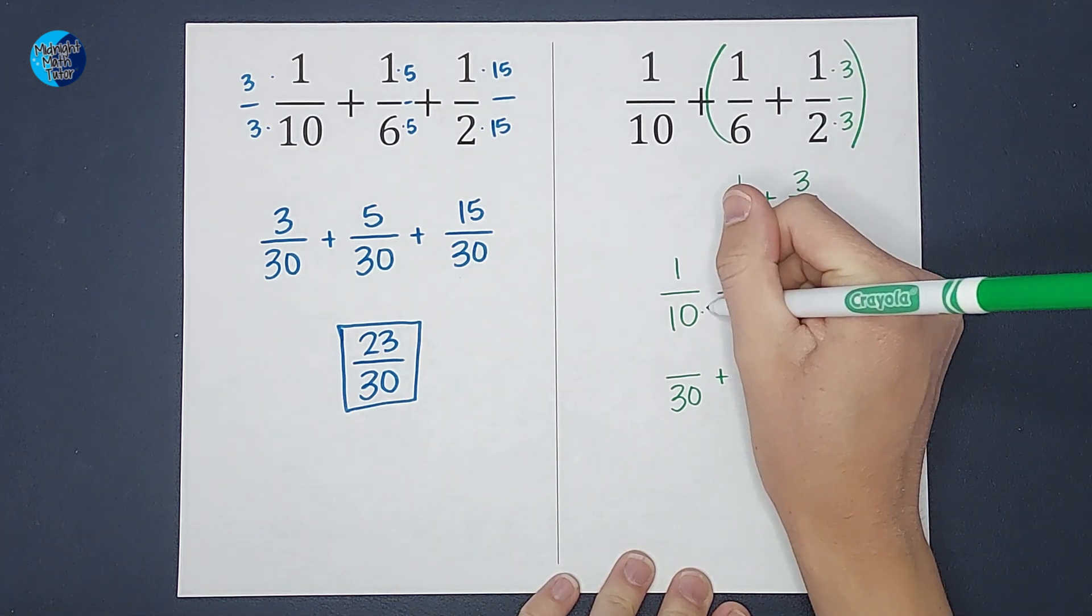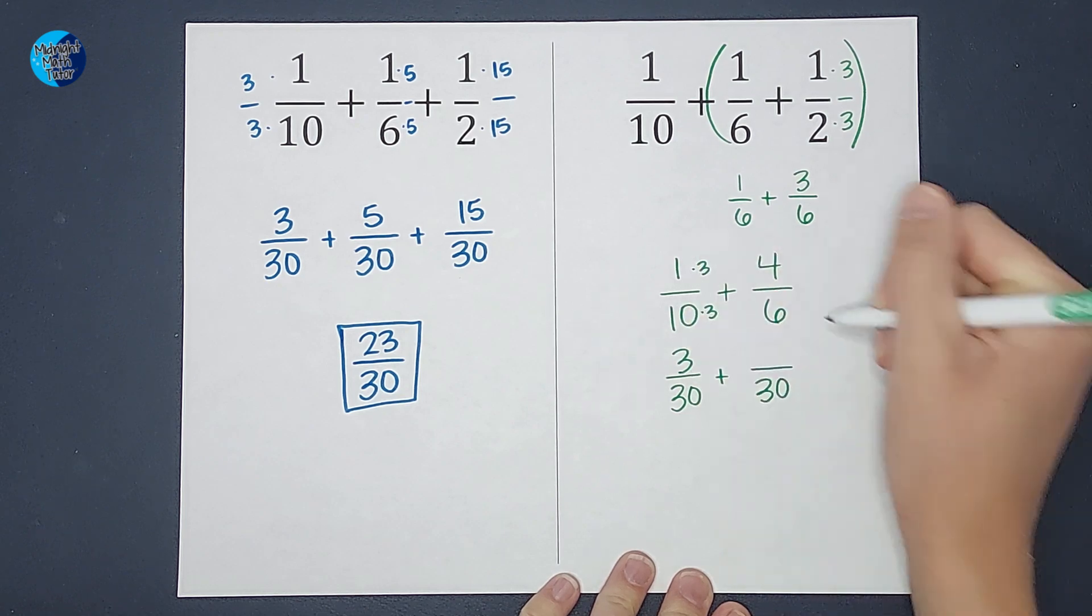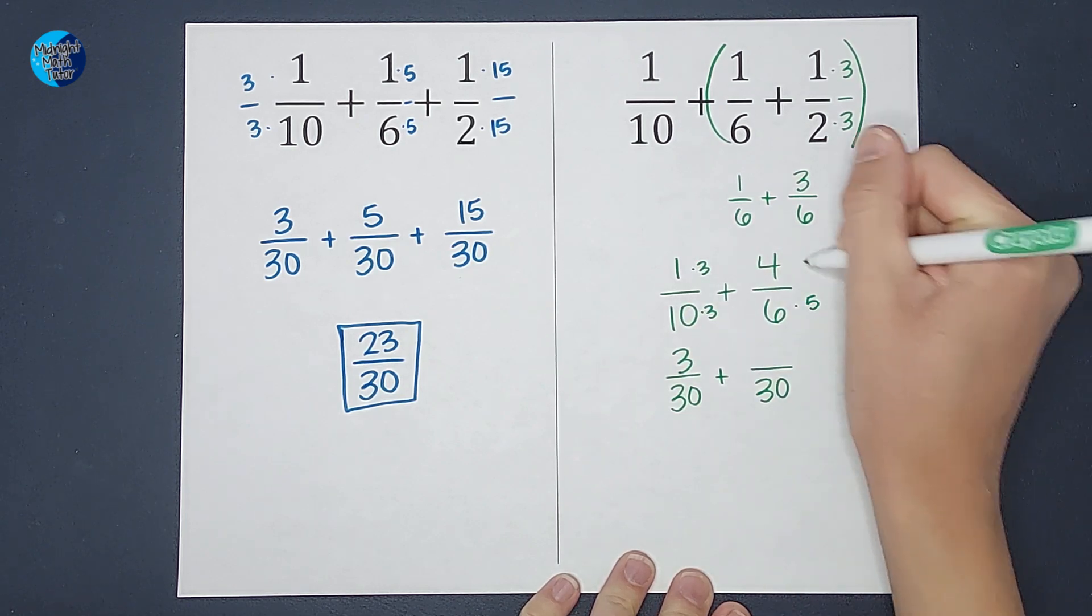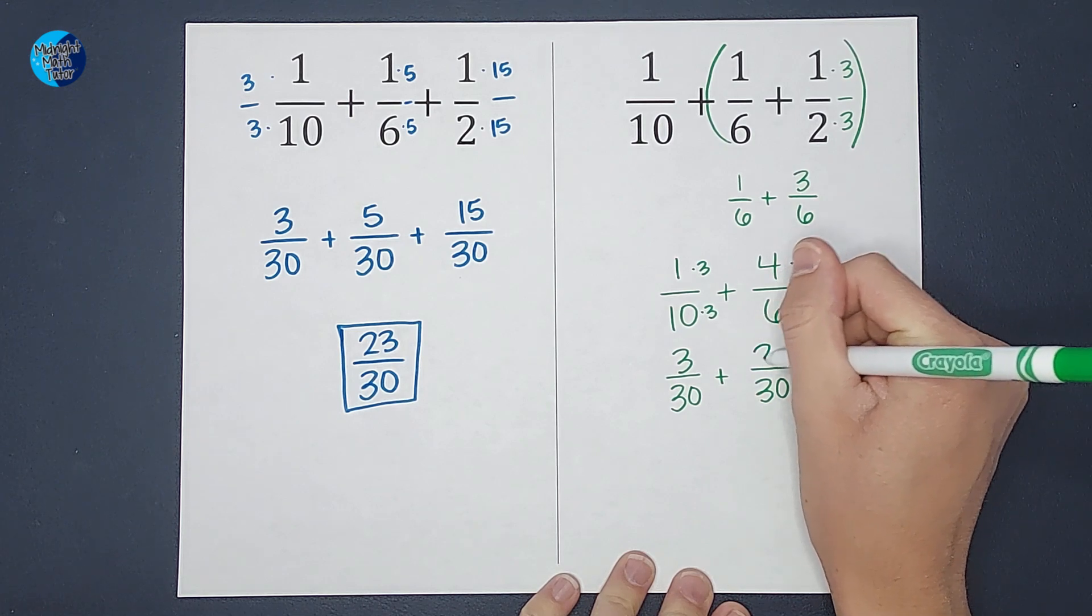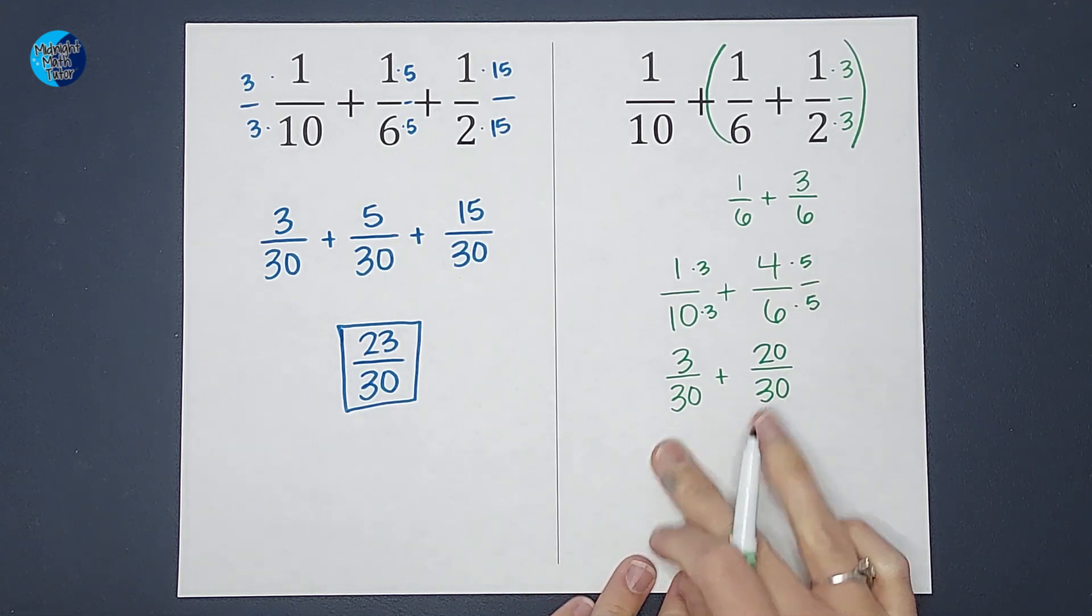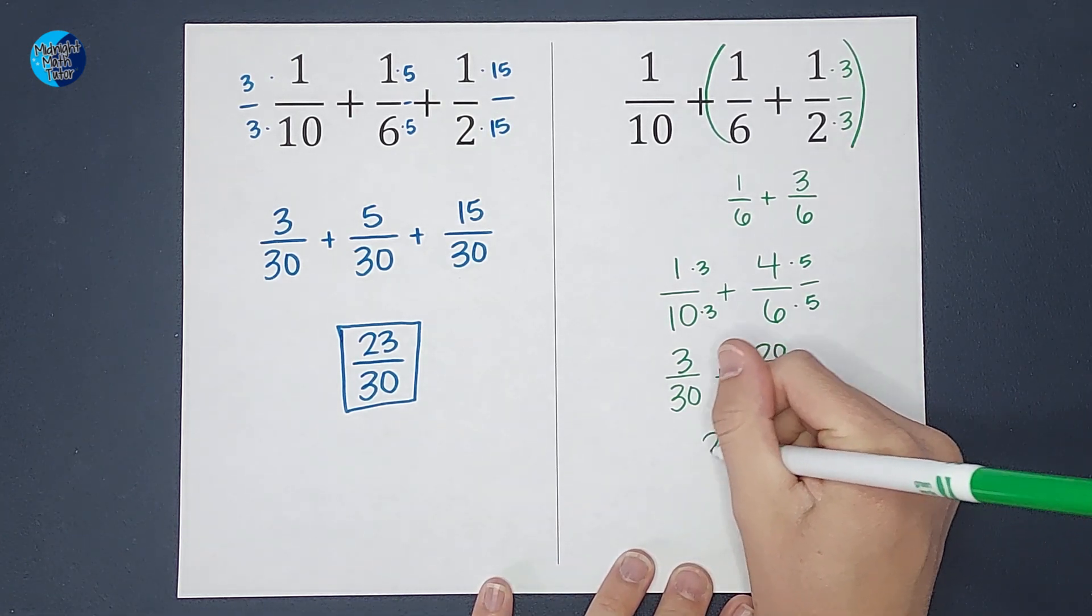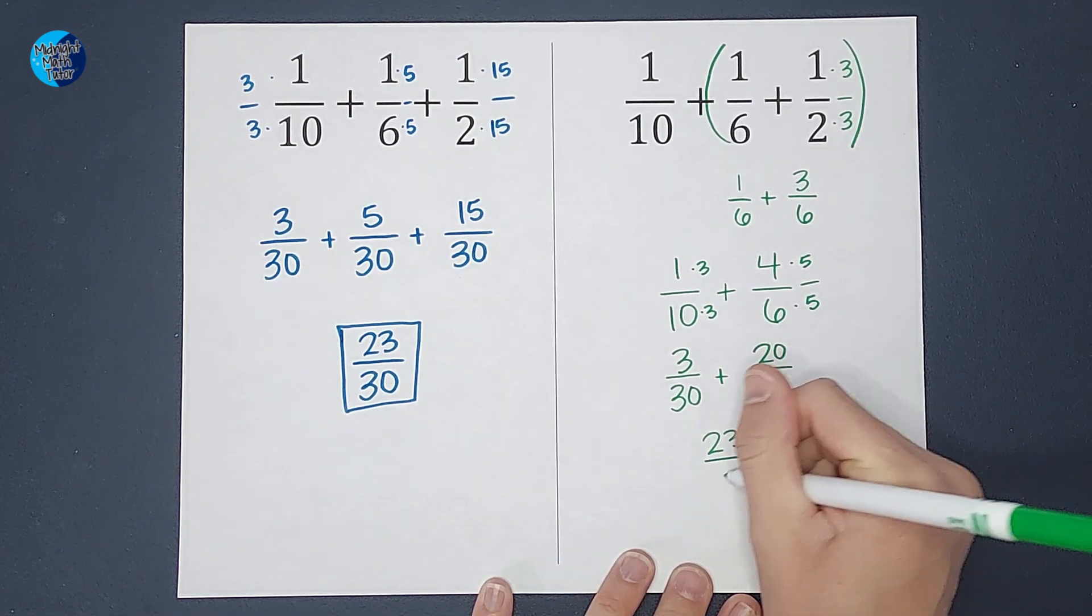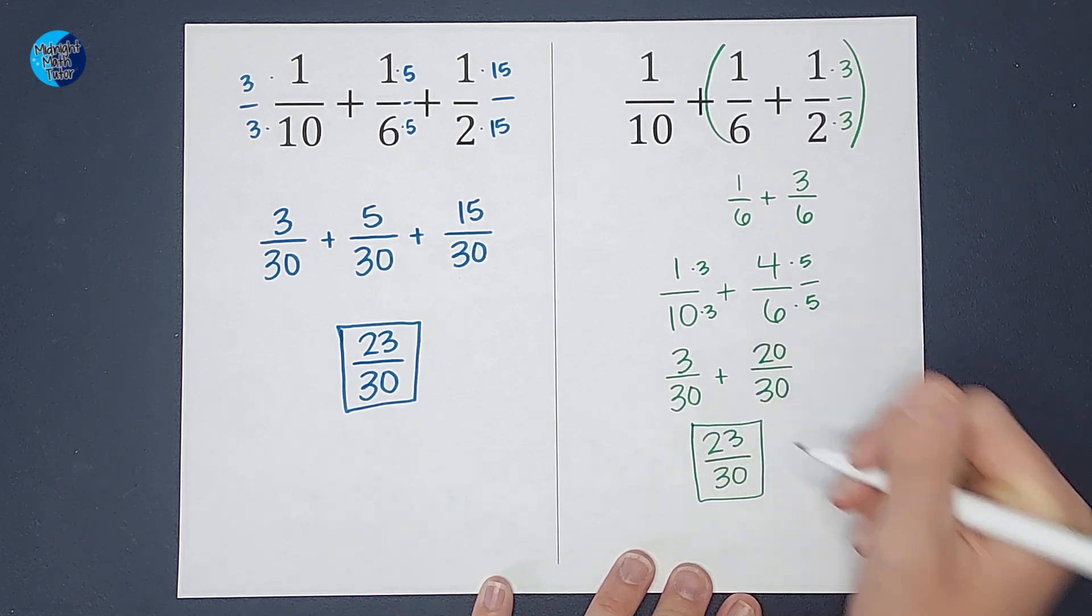So this one I would times by three on the bottom. If I do it on bottom, I got to do it on top. This one I would times by five. If I do it on bottom, I got to do it on top. So I end up with 20 thirtieths here plus three thirtieths. Guess what? When I add those together, I get 23 thirtieths. That doesn't simplify. So there we go.